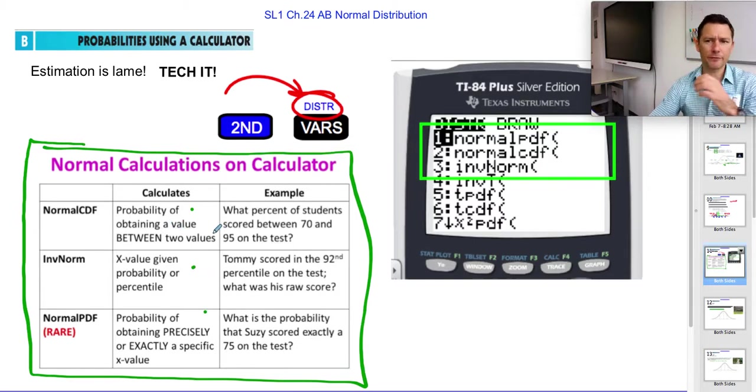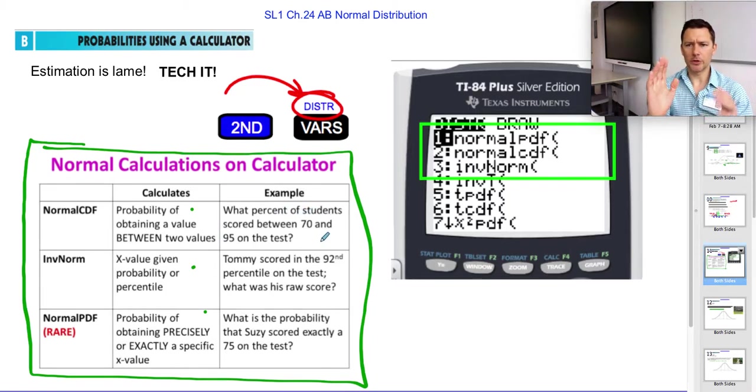Normal CDF finds you the probability between two values. So, you know, what percentage of students scored between these two values on a test? The inverse normal gives you the x value given the probability. So he said he scored this percentile, what's his regular score, right? And normal PDF gives you an exact value. It's like CDF, but it's not a range. It gives you an exact value for a y value given an x value.